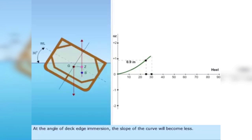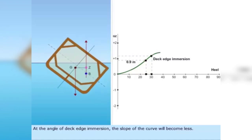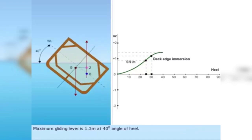At the angle of deck edge immersion, the slope of the curve will become less. Maximum gliding lever is 1.3 meters at 40 degree angle of heel.